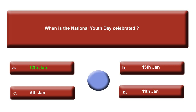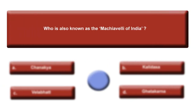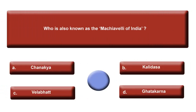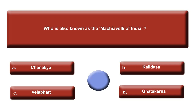Next question: Who is also known as the Machiavelli of India? Option A: Chanakya. Option B: Kalidas. Option C: Birbal. Option D: Gatakarna. Your time is up. The answer is A, Chanakya.